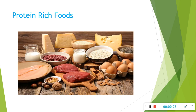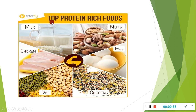In this topic we will focus only on functions of proteins. First of all, these are foods which are rich in proteins. Meat, eggs, and pulses are rich sources of proteins. Nuts are a best source of proteins. Eggs also contain a rich quantity of protein, as do milk, chicken, and oil seeds.